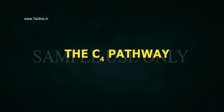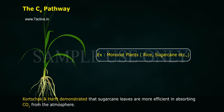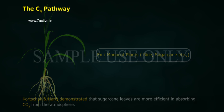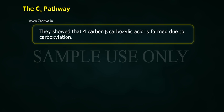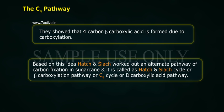The C4 Pathway: Kortschak and Hatch demonstrated that sugarcane leaves are more efficient in absorbing CO2 from the atmosphere. They showed that a 4-carbon beta carboxylic acid is formed due to carboxylation. Based on this idea, Hatch and Slack worked out an alternate pathway of carbon fixation in sugarcane, called the Hatch and Slack Cycle, or Beta Carboxylation Pathway, or C4 Cycle, or Dicarboxylic Acid Pathway.